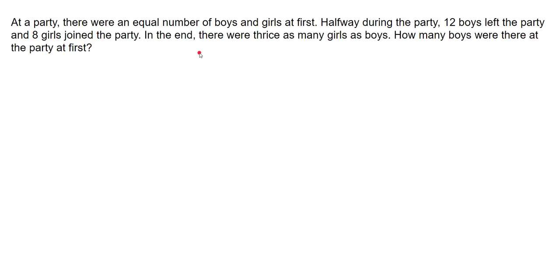When you look at this question, there are three distinct sets of information. First, at the beginning of the party the number of boys and girls were equal. Second, there is a change in the middle: 12 boys left and 8 girls joined. So at the end, there will be 12 fewer boys and 8 more girls, and now the number of girls becomes three times the number of boys.